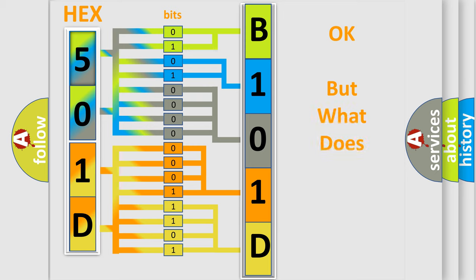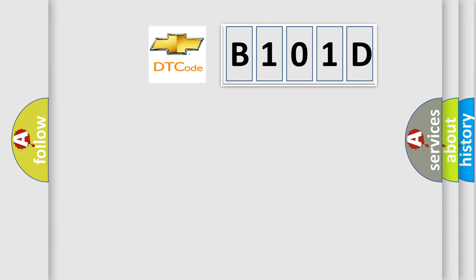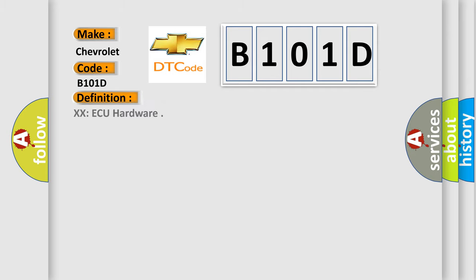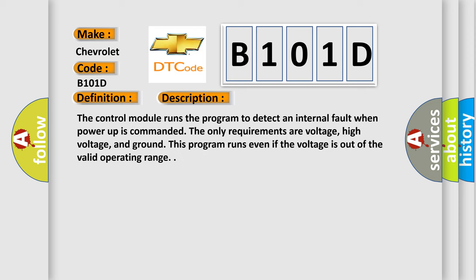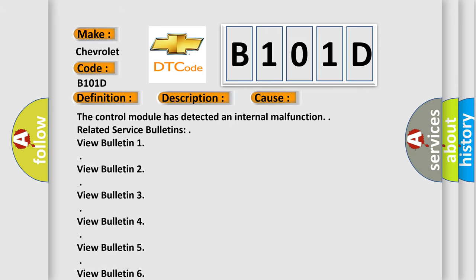We now know how the diagnostic tool translates the received information into a more comprehensible format. The number itself does not make sense if we cannot assign information about what it actually expresses. So, what does the Diagnostic Trouble Code B101D interpret specifically for Chevrolet? The control module runs a program to detect an internal fault when power-up is commanded. The only requirements are voltage, high voltage, and ground. This program runs even if the voltage is out of the valid operating range.